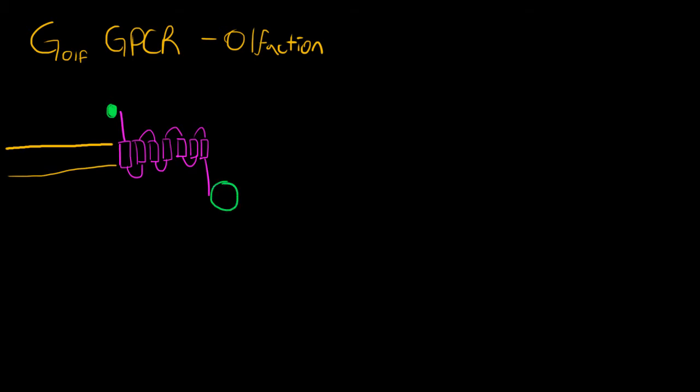And the same deal is going to happen similar to any other GPCR. So our alpha subunit or G protein dissociates, and again we have our beta gamma subunits.